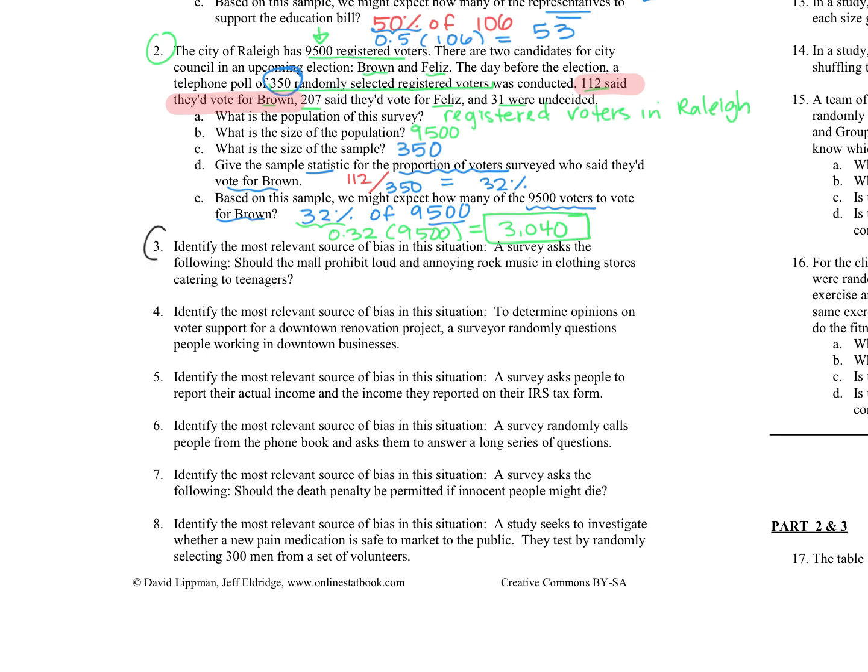Alright. For question number three, we're going to be looking at bias. So we're going to identify what type of bias you think is going on here. It says, a survey asked the following, should the mall prohibit loud and annoying rock music in clothing stores catering to teenagers? And you can kind of hear it when I left because I'm looking at prohibiting loud and annoying. So it's already kind of like loading or leading the question, I guess you could say. But really, the bias that I see is that it's a loaded question bias. It already has some kind of tone to it with that loud and annoying word choice.